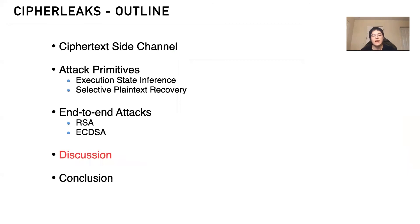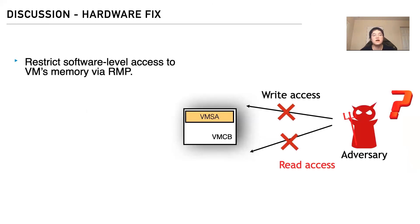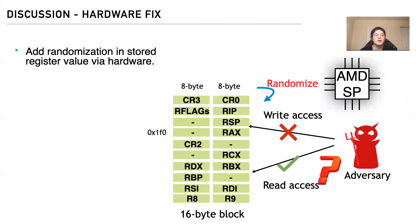A quick discussion: in our ciphertext attacks, we collect the ciphertext side channel at page level, meaning we only collect ciphertext when there is a page fault. The adversary could also use APIC interrupts to get instruction-level ciphertext side channel, enabling inference of execution states within the same instruction page. Regarding hardware fixes, two potential approaches exist: one is to restrict software-level read access to the VM's memory and VMSA using the RMP table; the other is to add randomization when storing registers in the VMSA. According to our discussion with the AMD team, a hardware patch may be coming soon.